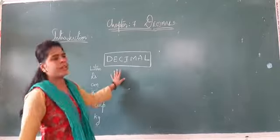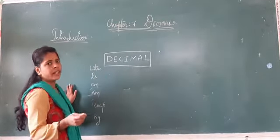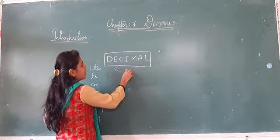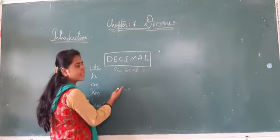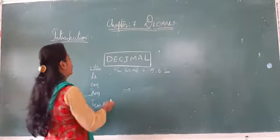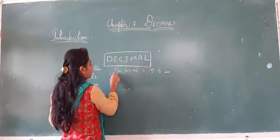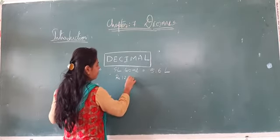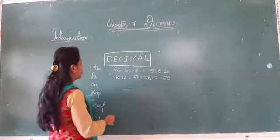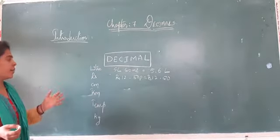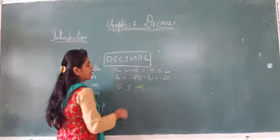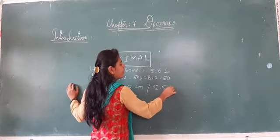Here are more decimal examples. If you have 5 liters and 60 ml, it can be written as 5.6 liters. Similarly, 12 rupees and 50 paise is written as 12.5 rupees. In measurement, a 5.5 centimeter length can also be written as 5.5 meters. A journey of 1 kilometer 250 meters can be written as 1.25 kilometers.